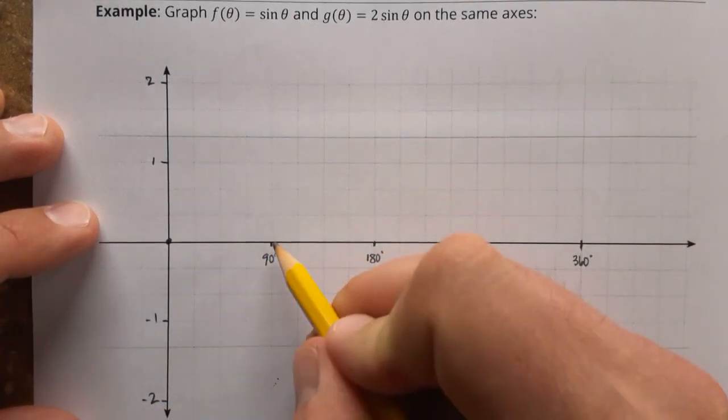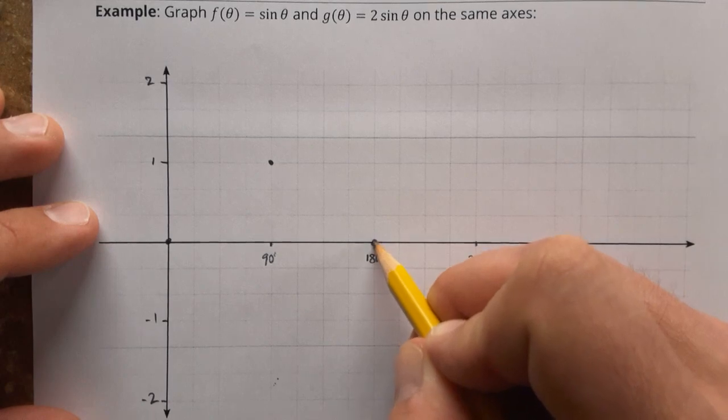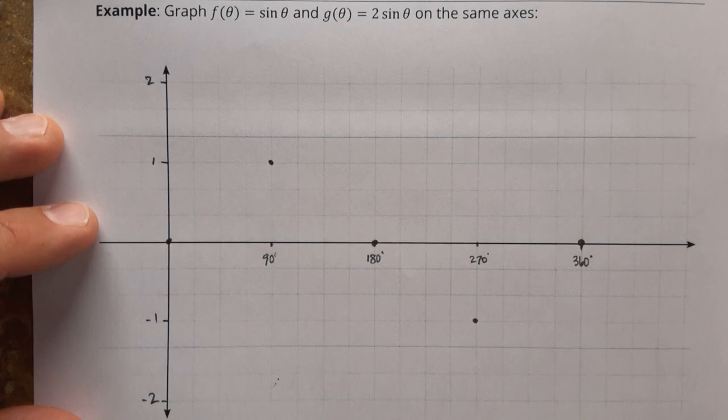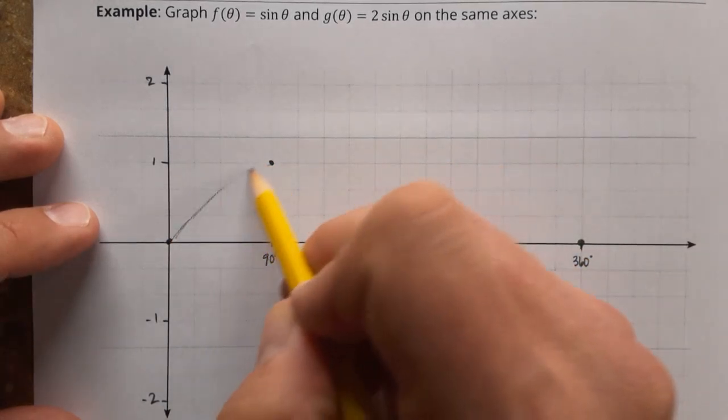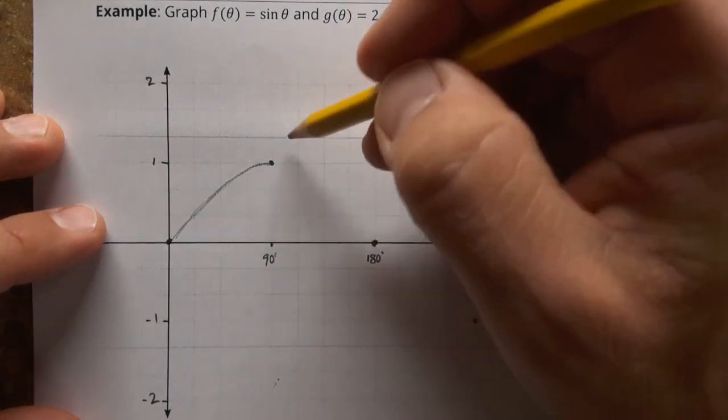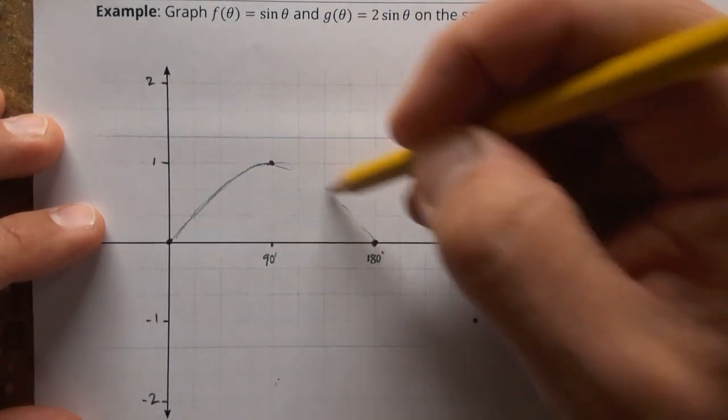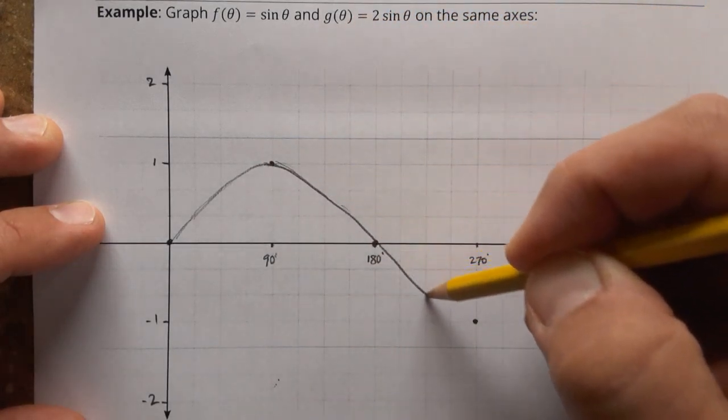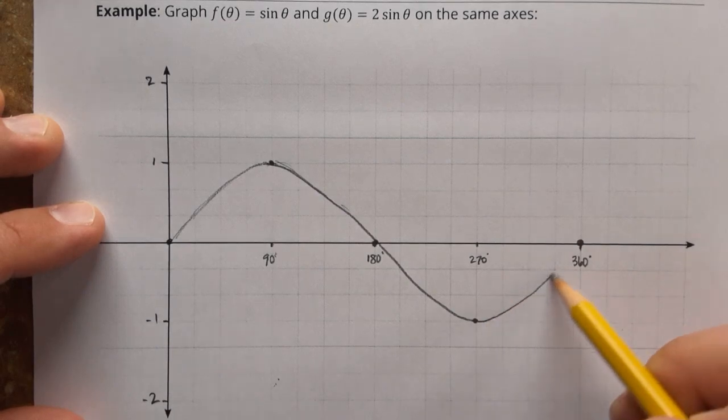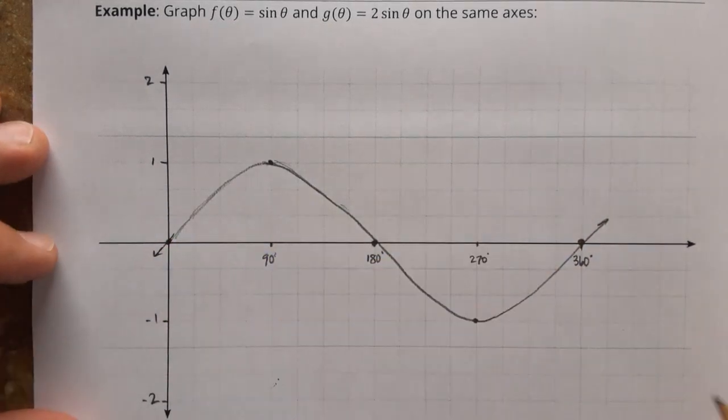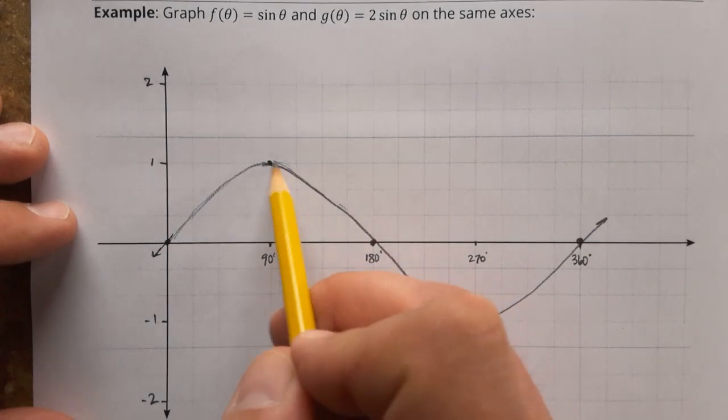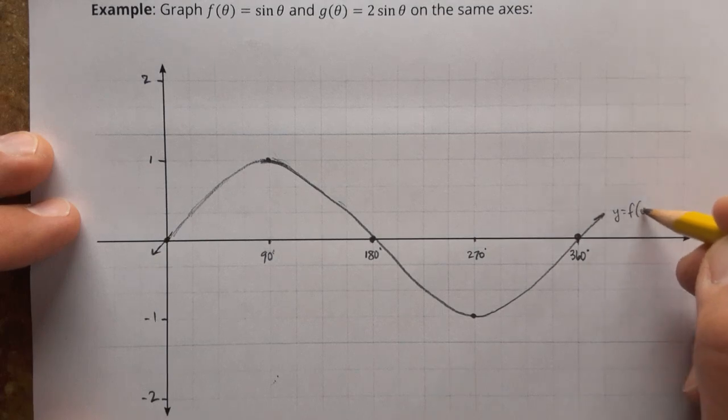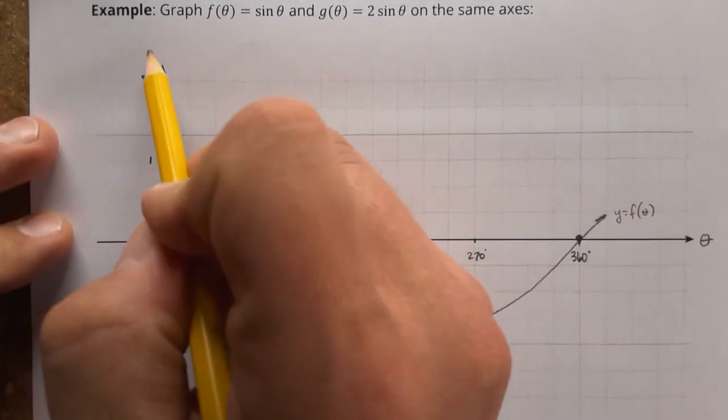Starts at zero, zero, goes up to 90 and one, back down to zero, negative one at 270, and back up to zero again. I'll just sketch this one in. Arrows on each end, because that continues forever. Could have been a little smoother in there. Sorry about that. So that is y equals f of theta. That's our theta axis. That's the y-axis.